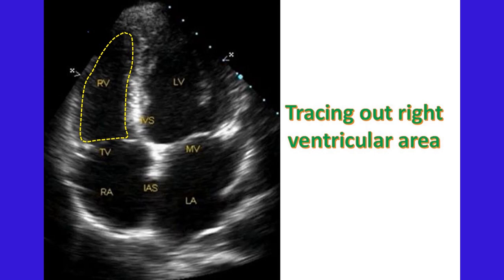Right ventricular fractional area change can be measured from the four-chamber view by tracing out the diastolic and systolic frames. Fractional area change equals end-diastolic area minus end-systolic area, divided by end-diastolic area. Normal values range from 32 to 60%. Fractional area change is highly load dependent. The complex geometry of the right ventricle and coarse trabeculations make tracing out the right ventricular area challenging, though there has been good correlation with RV ejection fraction measured using magnetic resonance imaging.